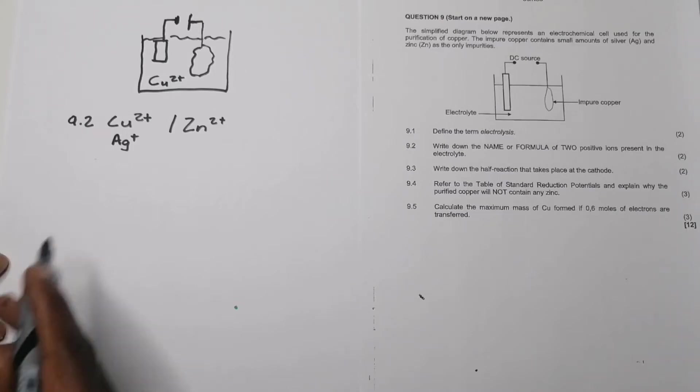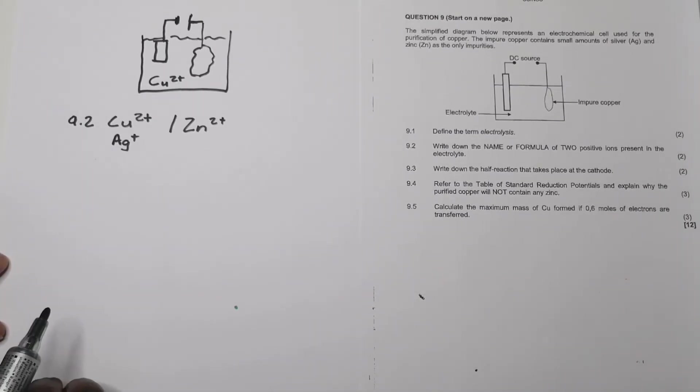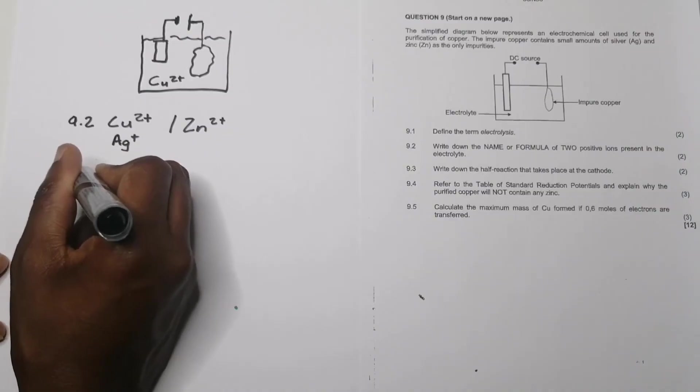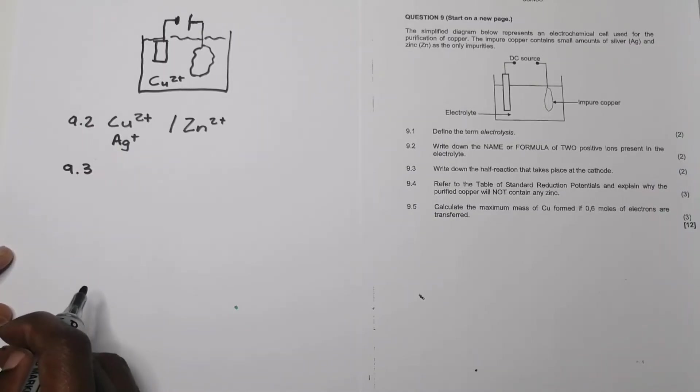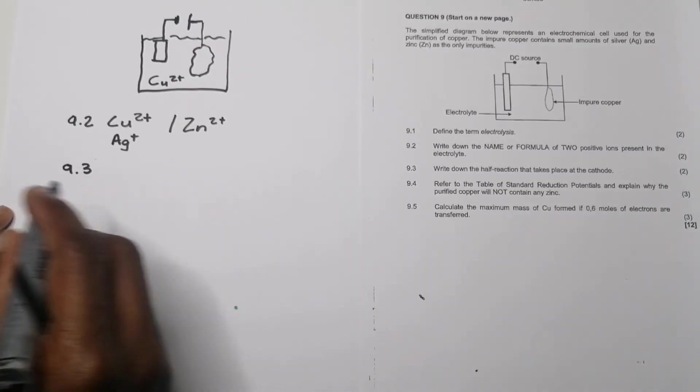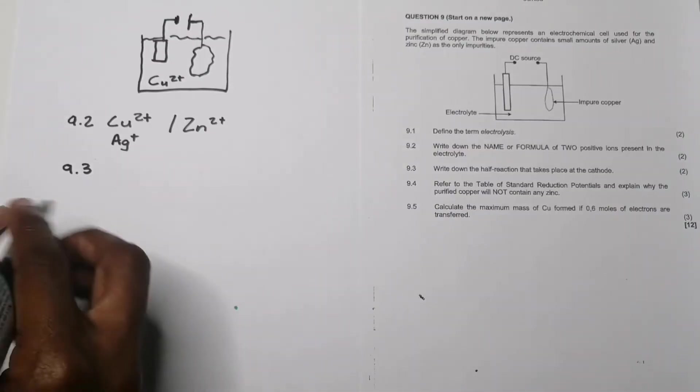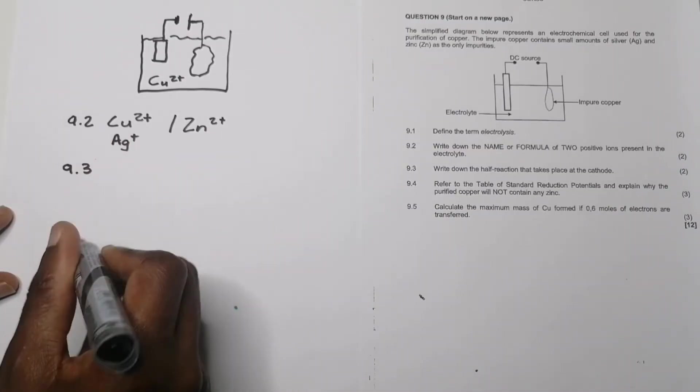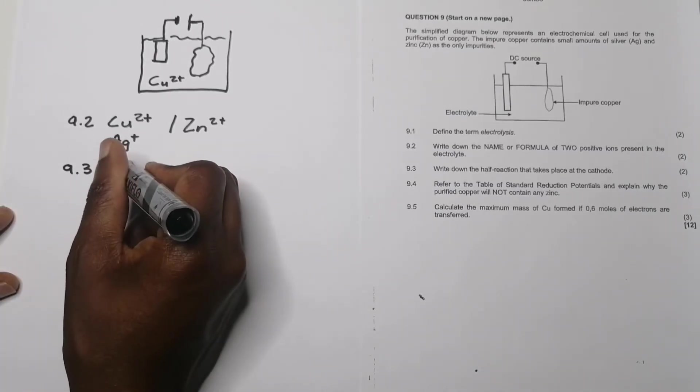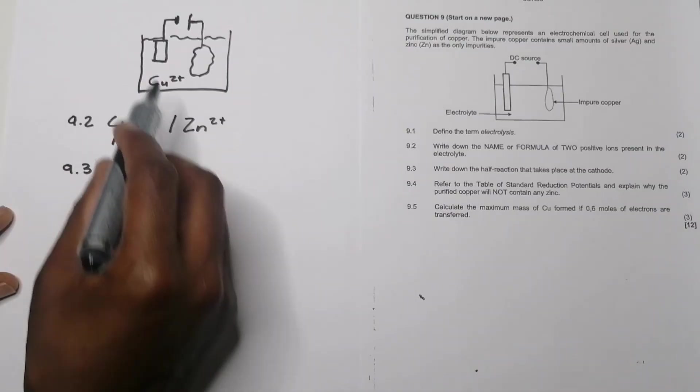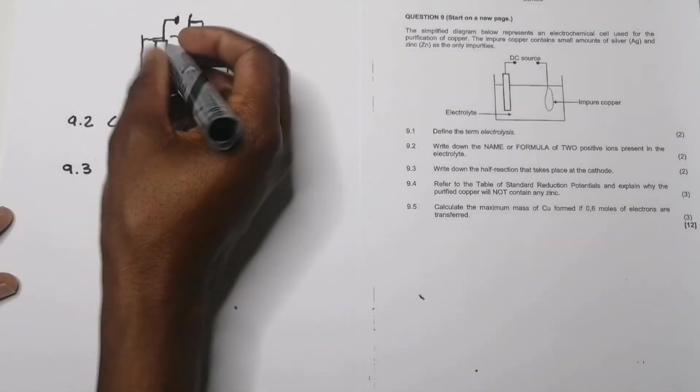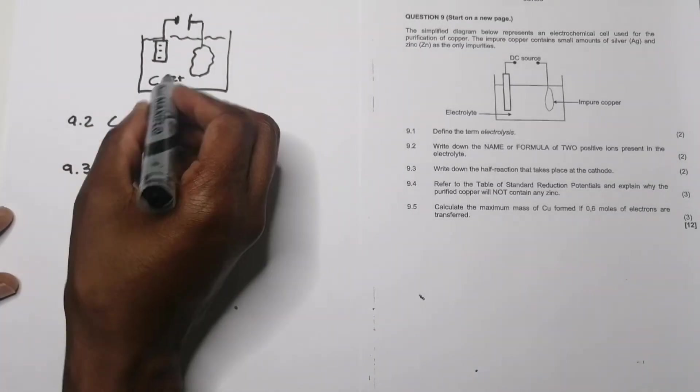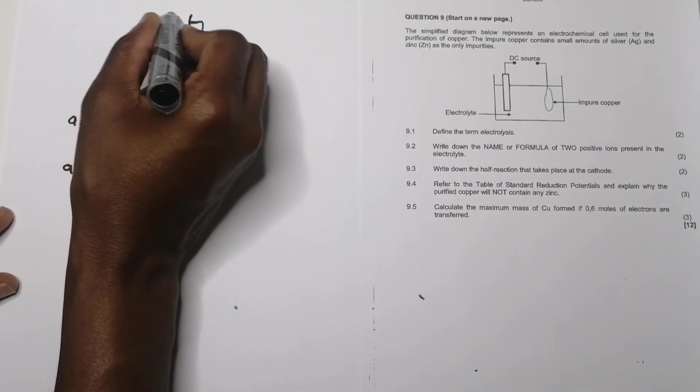They say write down the half reaction that takes place at the cathode. Remember at the cathode, this is where reduction is taking place. We do have another video on the electrolytic cell if you haven't watched it. At the cathode, reduction is taking place, which is the receiving of electrons. Reduction is taking place at the negative side. This guy has to be negatively charged, so copper 2+ ions would actually be attracted there.